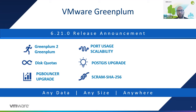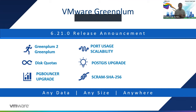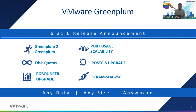SCRAM SHA-256, which I referred to in PG Bouncer since it also supports this authentication, is a new 256-bit hashing algorithm enabled in Greenplum, backported from Postgres 10. It allows password authentication to have more security bits and protect against security incidents. As more users continue to put more data into Greenplum, staying up to date with the latest secure connections is critically important.